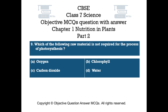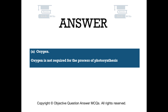Question number 9: Which of the following raw materials is not required for the process of photosynthesis? Option A: oxygen. Option B: chlorophyll. Option C: carbon dioxide. Option D: water. The right answer is option A — oxygen. Oxygen is not required for the process of photosynthesis.